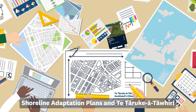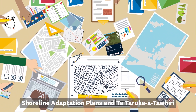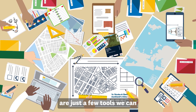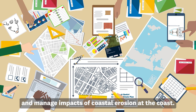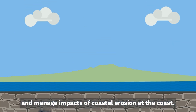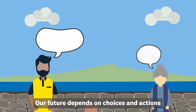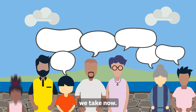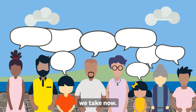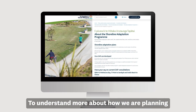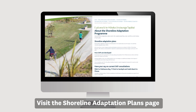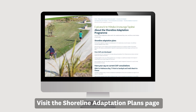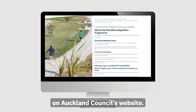Shoreline Adaptation Plans and Te Tāruke-ā-Tāwhiri are just a few tools we can use to plan for and manage impacts of coastal erosion at the coast. Our future depends on choices and actions we take now. To understand more about how we are planning for the future of our coastal areas, visit the Shoreline Adaptation Plans page on Auckland Council's website.